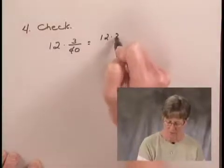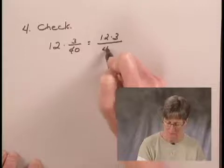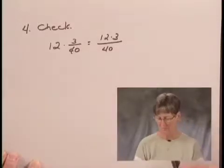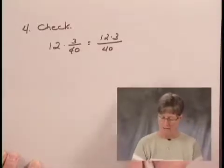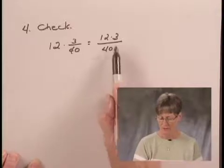Multiplying in the numerators, I have 12 times 3. In the denominator, I have 40, or we could think of it as 1 times 40. Simplifying, I look at 12 and I see that it has a factor of 4. And 40 has a factor of 4.